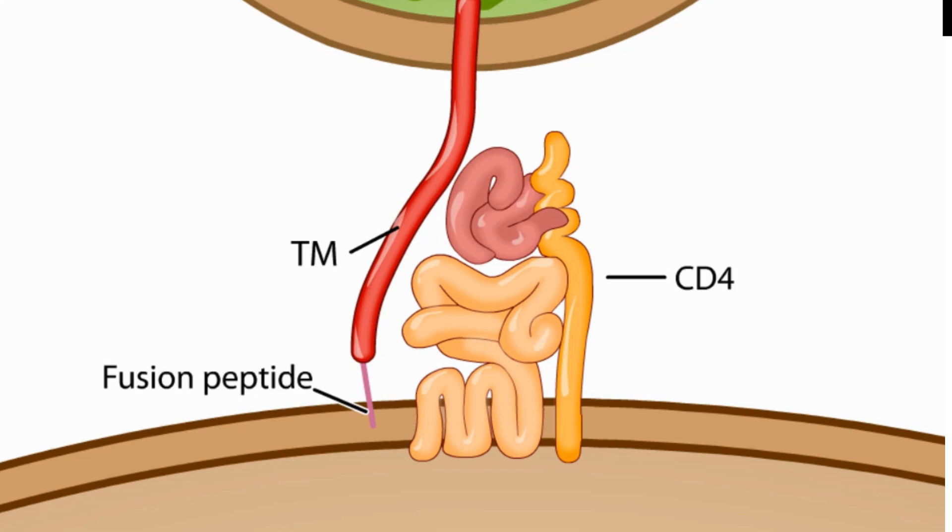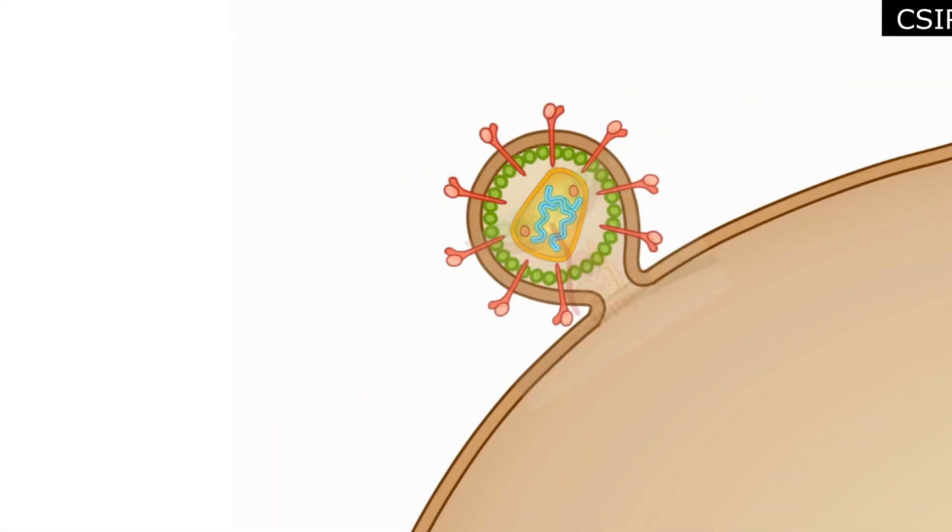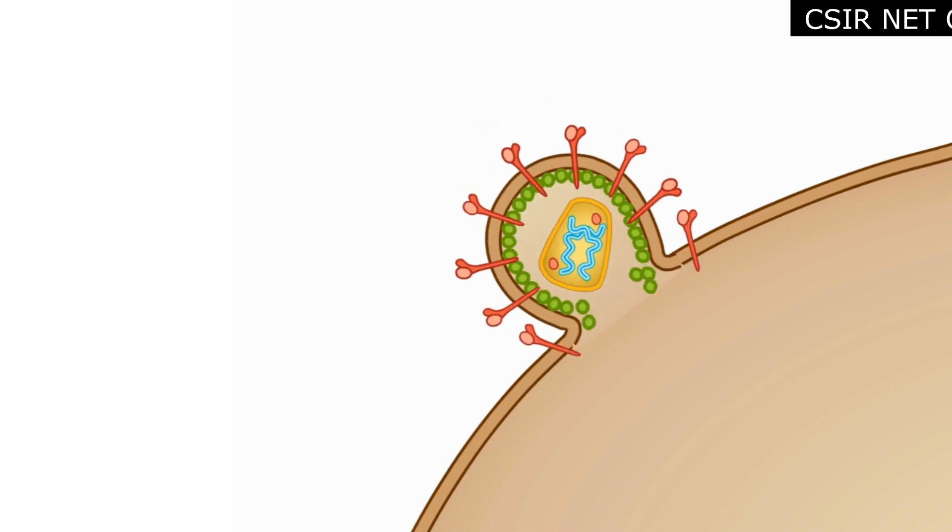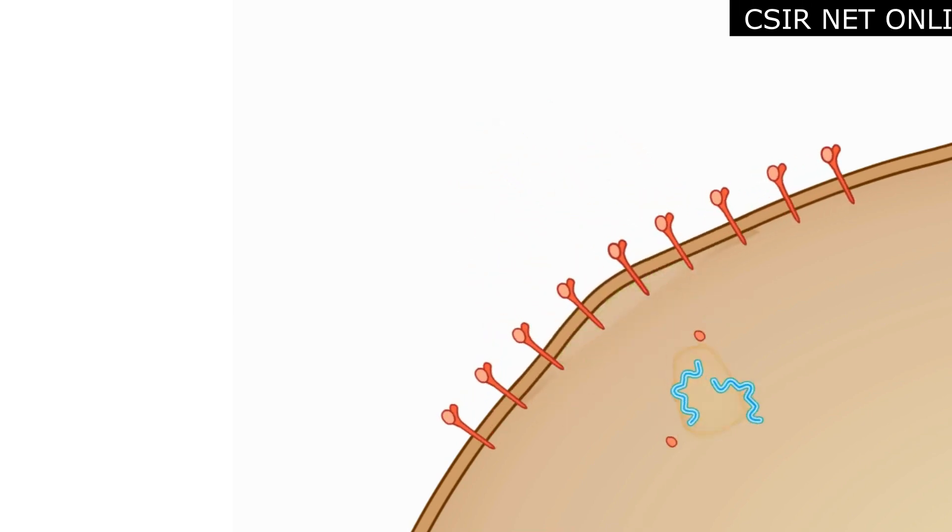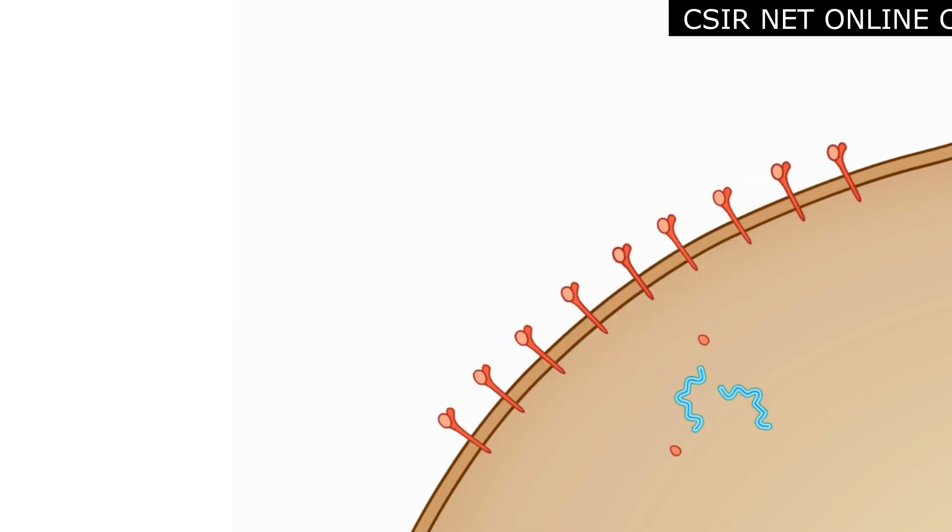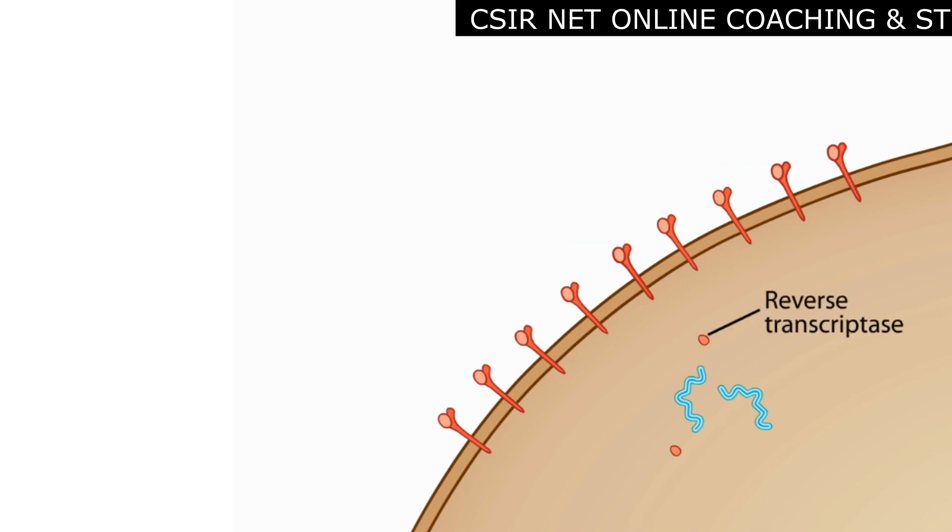After the insertion of the fusion peptide, the viral envelope fuses with the plasma membrane and releases the viral core into the cytoplasm. In the core are twin RNA genomes and associated viral enzymes, including two copies of reverse transcriptase.